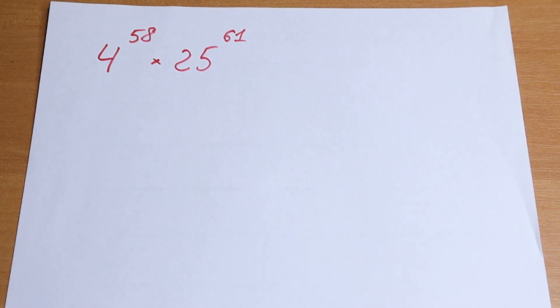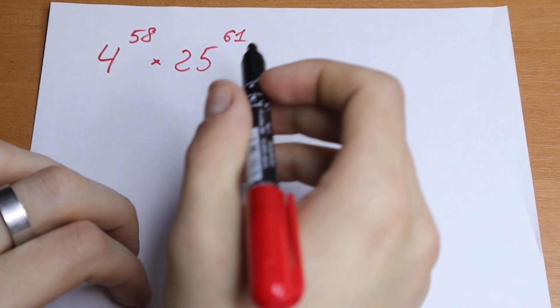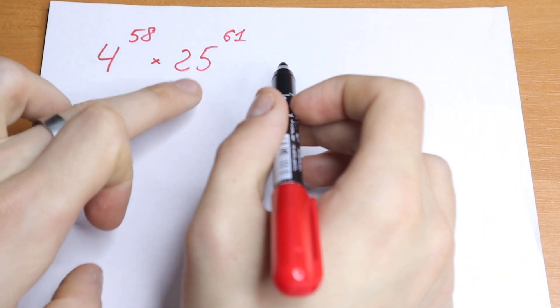Hello everyone, welcome back to Mathmoo. Today we have an interesting problem. We have 4 to the power 58 times 25 to the power 61.